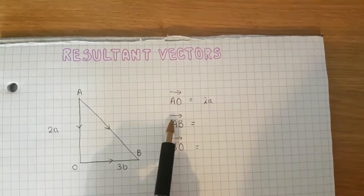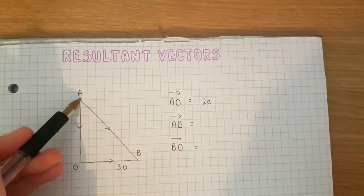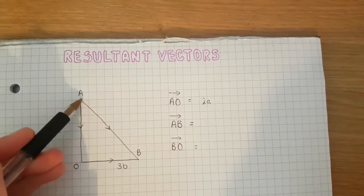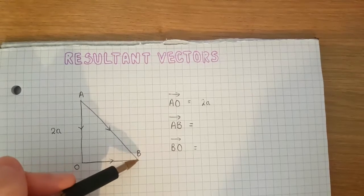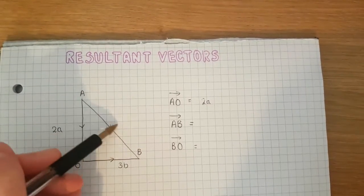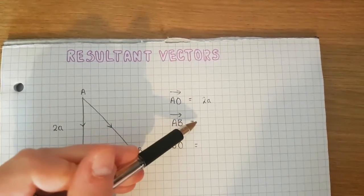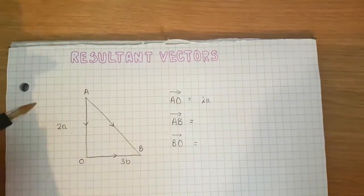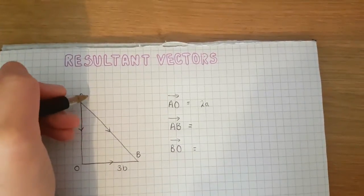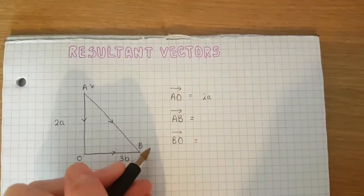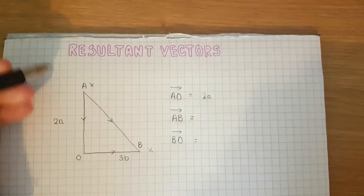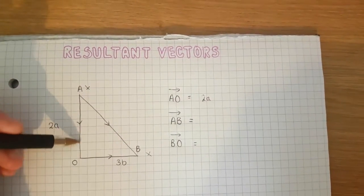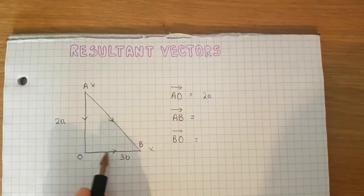Now alternatively, AB is this vector here, going from A all the way to B. But we haven't been given what this vector is, so I can't just put down the answer. The way to describe vector AB is to go another route. Although I want to get from this point to this point, I can go down this way and then along this way.